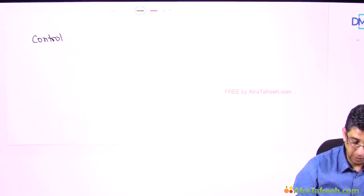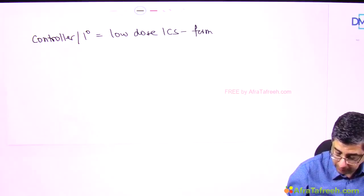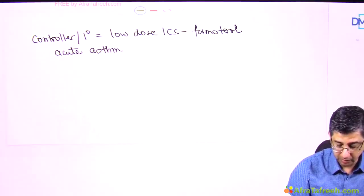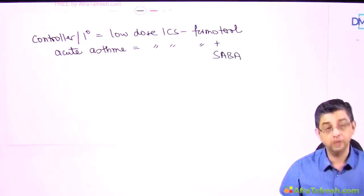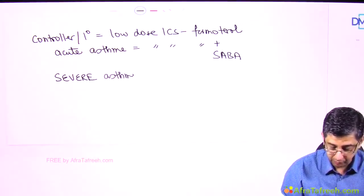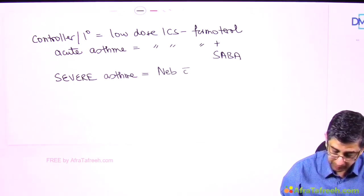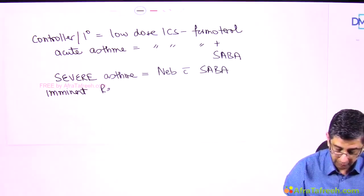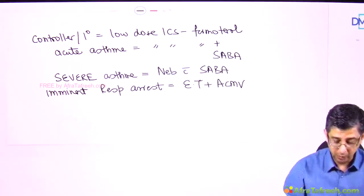Summary of asthma management: For controller medication (prevention), answer: low-dose inhaled corticosteroids with formoterol. For acute exacerbation, answer: low-dose ICS with formoterol, add SABA, then oral corticosteroids. For severe acute asthma (PEF or FEV1 less than 40%), answer: nebulization with salbutamol plus IV hydrocortisone. For imminent respiratory arrest, answer: elective intubation with assisted controlled mechanical ventilation (ACMV) and permissive hypercapnia.